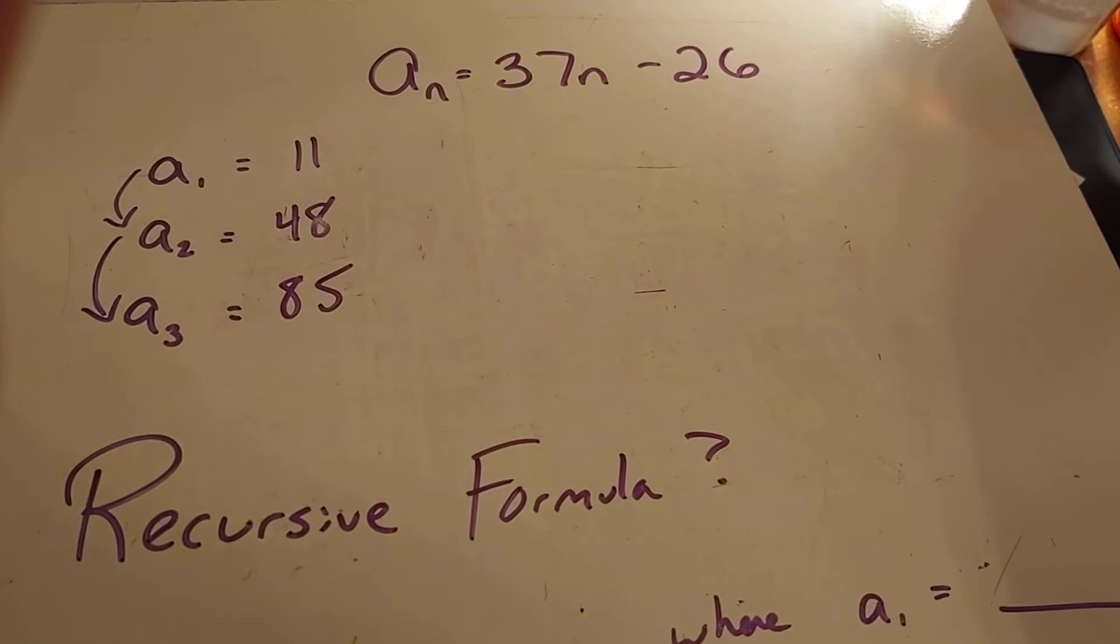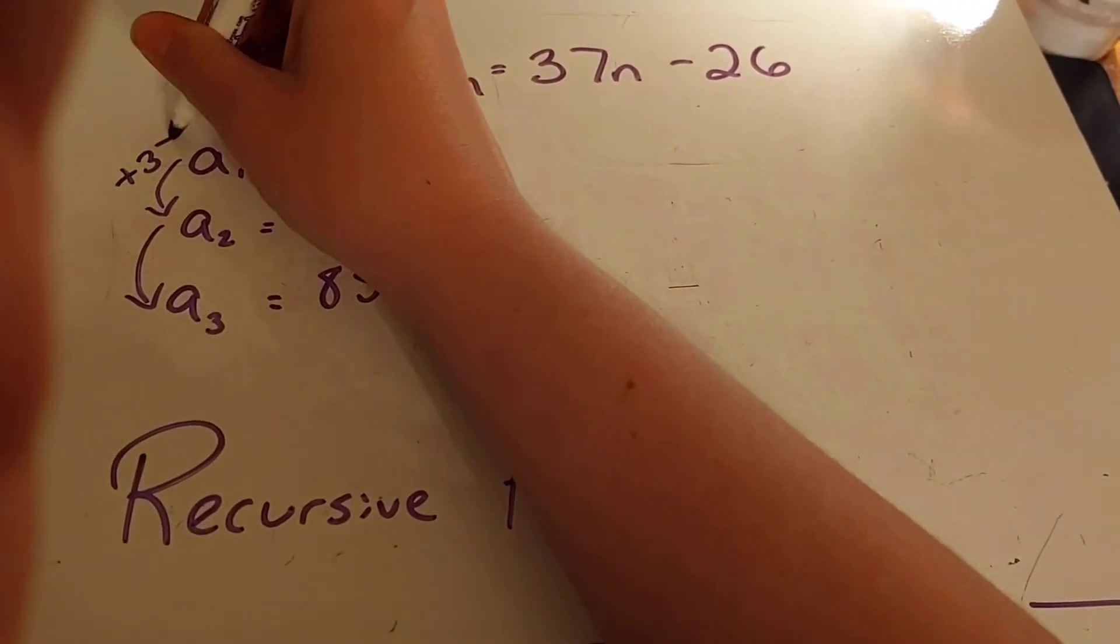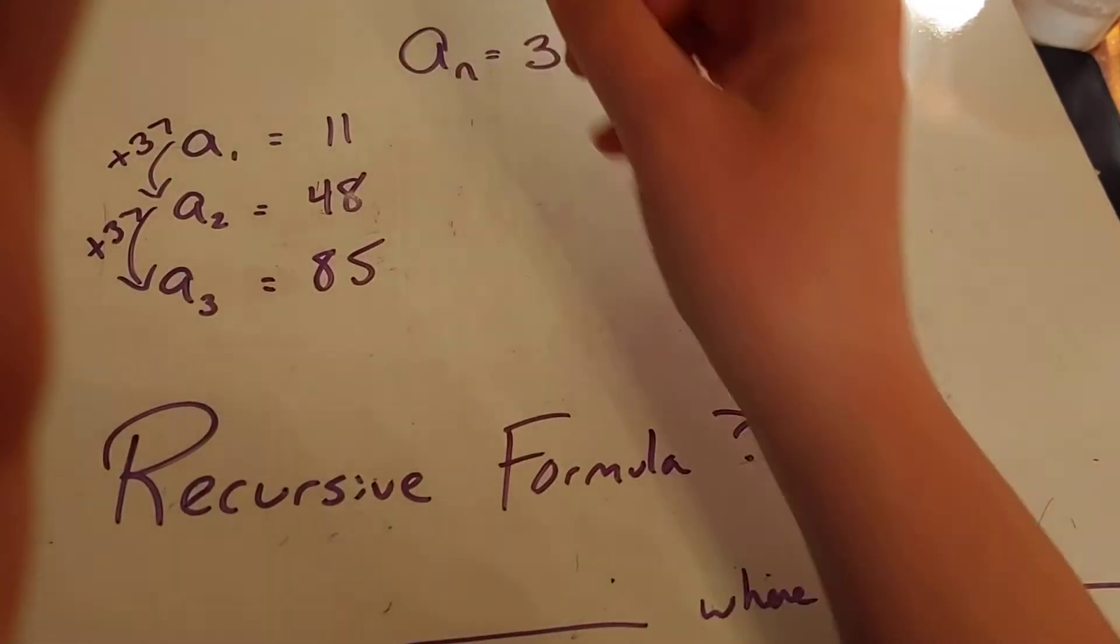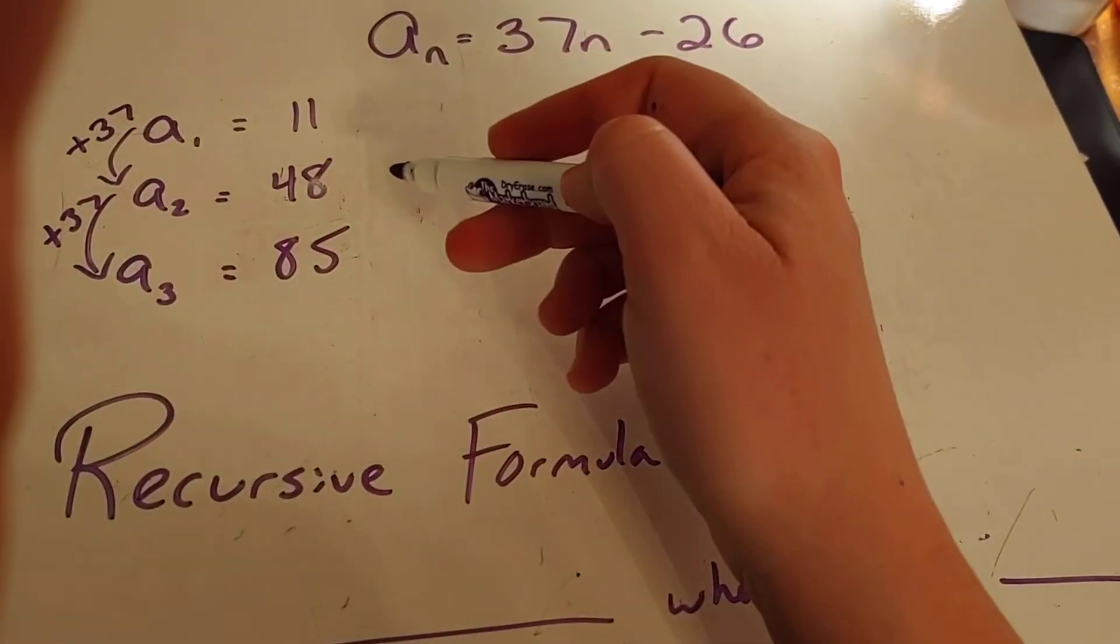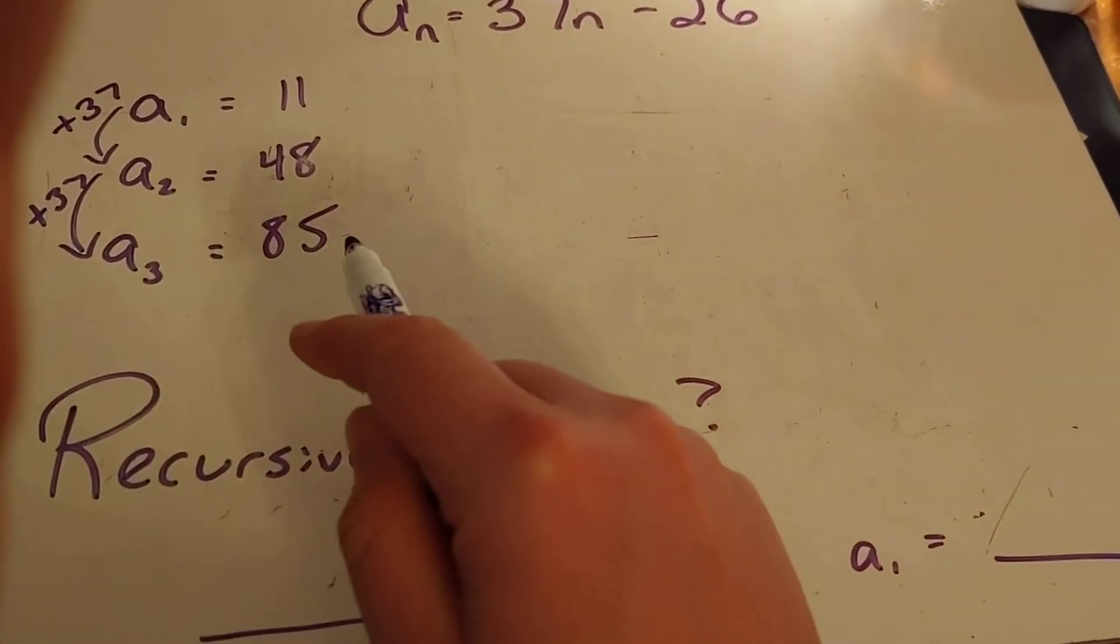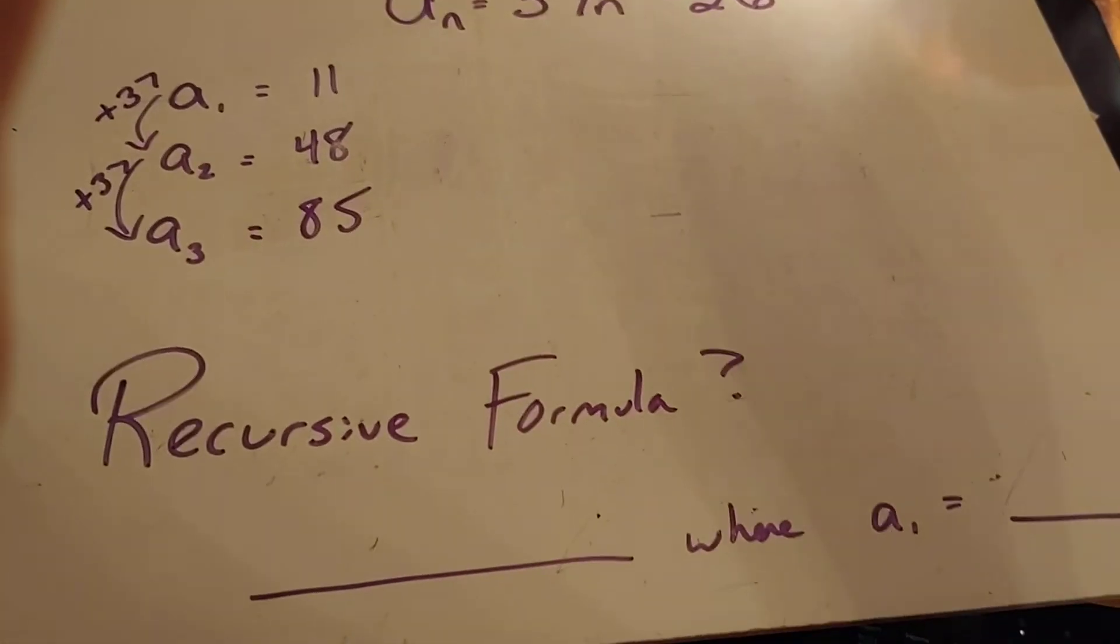Well, I'm thinking if this is linear and my slope was 37, I bet you I add 37. Is that true? 11 plus 37 is 48. 48 plus 37 is 85. I could keep going all day. Add 37, add 37.